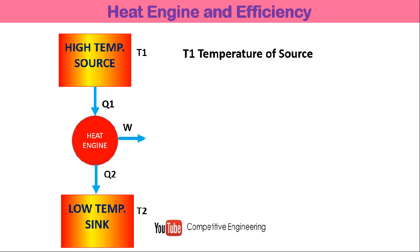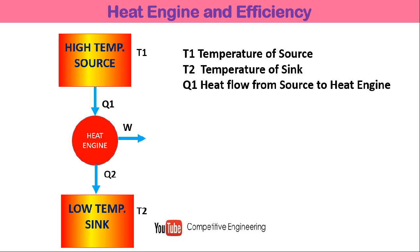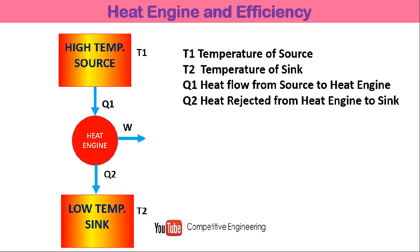The terms used here are: T1 is the temperature of the source, T2 is the temperature of the sink. T1 is the highest temperature and T2 is the lowest temperature. Q1 is the heat flowing from the high temperature source to the heat engine, and Q2 is the heat rejected from the heat engine to the sink at the lowest temperature T2. W is the net work output from the heat engine.